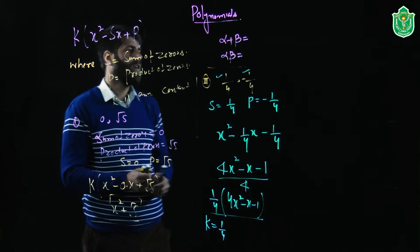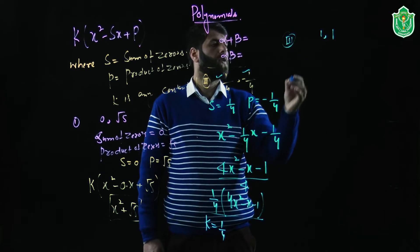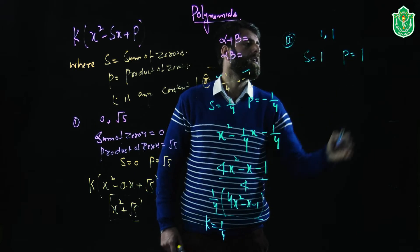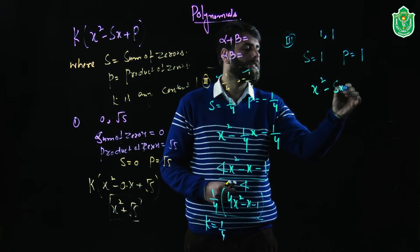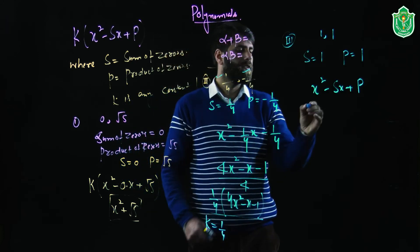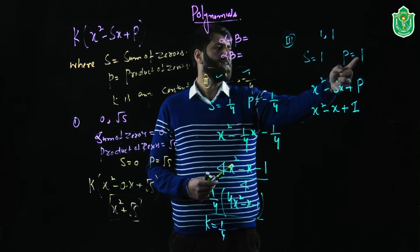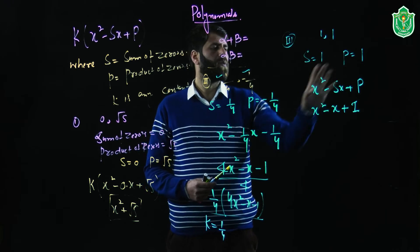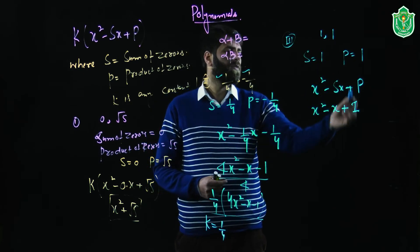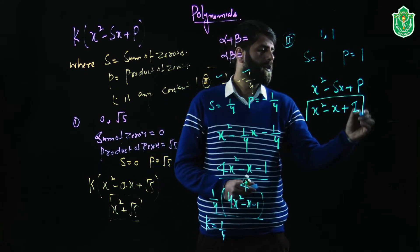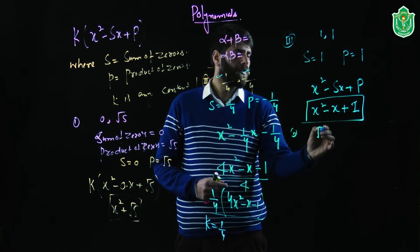For another example with zeros 1 and 1: s equals 1 and p equals 1. The quadratic polynomial is x squared minus sx plus p, which gives x squared minus 1 times x plus 1, that is x squared minus x plus 1. This is the required quadratic polynomial when sum of zeros is 1 and product of zeros is 1.